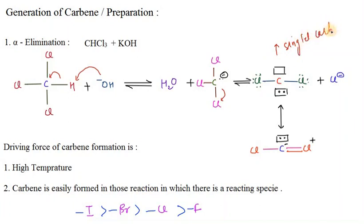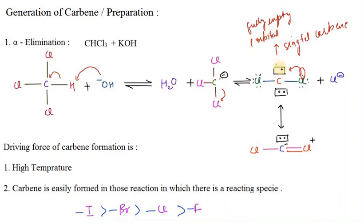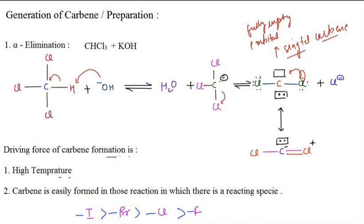We form a singlet carbene here because chlorine has a lone pair, making resonance possible. The two lone pairs of chlorine participate in resonance. For this to occur, the carbon must have a fully empty P orbital to accept those electrons. The driving force of carbene formation here is high temperature. Carbene is easily formed in reactions where there is a reactive species.